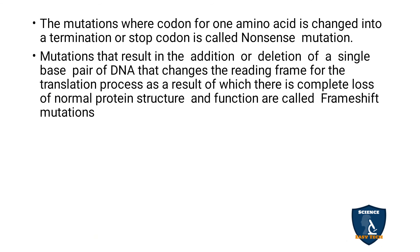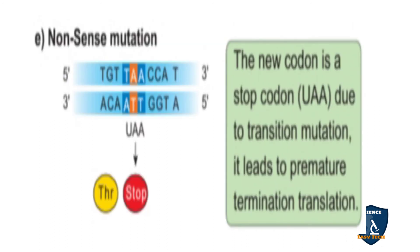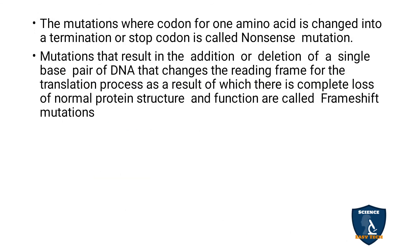The mutation where the codon for one amino acid is changed into a termination or stop codon is called nonsense mutation. For example, due to transition you get a UAA stop codon. Stop codons — UAA, UAG, UGA — terminate protein synthesis. The new codon leads to premature translation termination, stopping the process before it is fully complete. That type of mutation is called nonsense mutation.